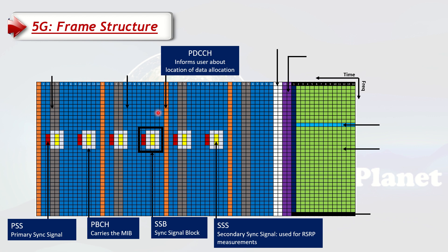PDCCH tells the UE where its data is allocated. For instance, if the UE reads PDCCH, it will know its downlink data is allocated here or its uplink data is allocated over here. It also does other things like telling you the location of system information. The next important thing is the PDSCH — Physical Downlink Shared Channel — all the blue portions are the data channel carrying traffic. The more blue blocks we have, the more data we can carry, meaning more capacity, higher data rates and throughput on 5G.